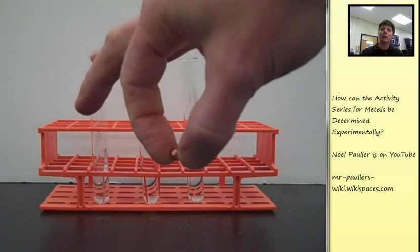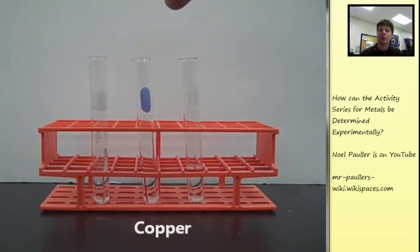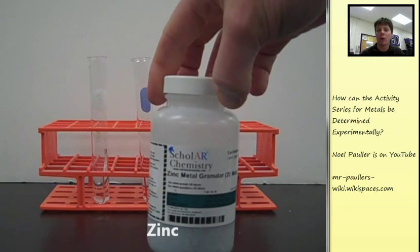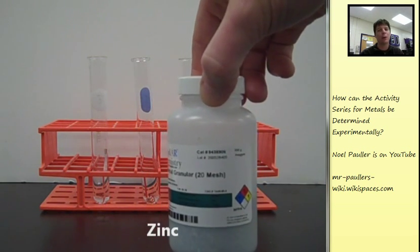The tube in the middle is going to get the sample of copper. We're going to add that into the hydrochloric acid in that middle tube. And lastly, we're going to be adding that granular zinc to the tube on the right-hand side.